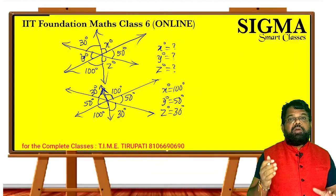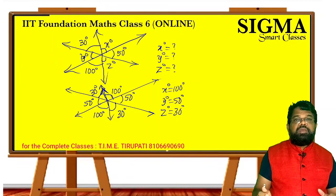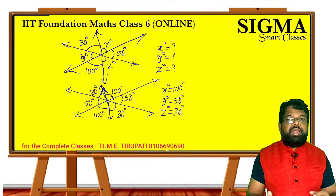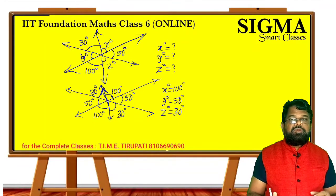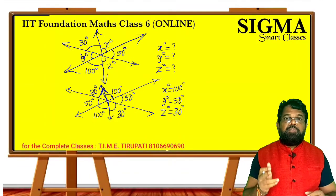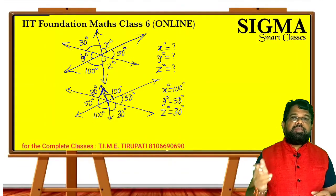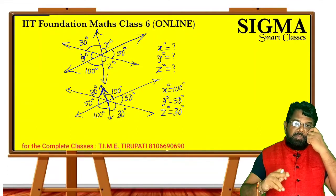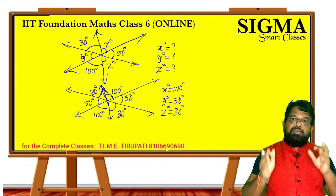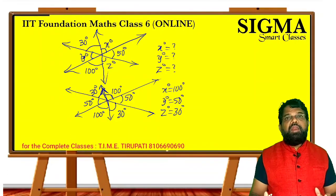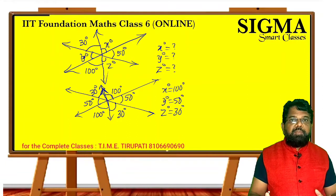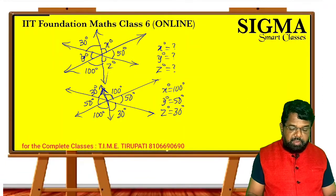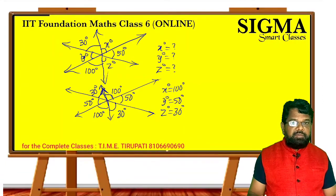So what is the property involved in this? If two lines intersect at one point, a vertex is made, and opposite to that vertex the opposite angles are equal. That is, opposite angles are always equal. By using that property we can calculate the values of x, y, and z.